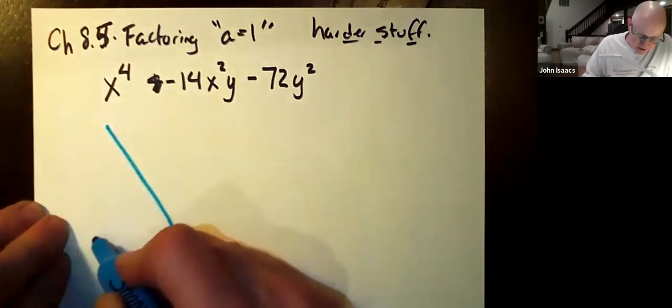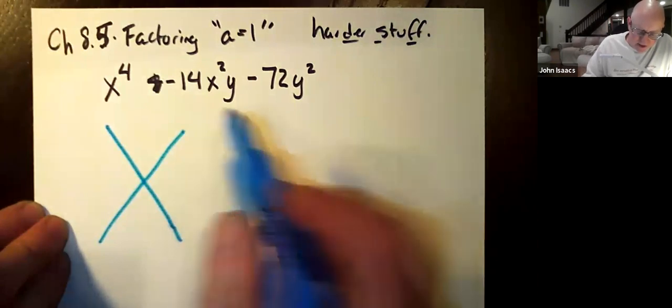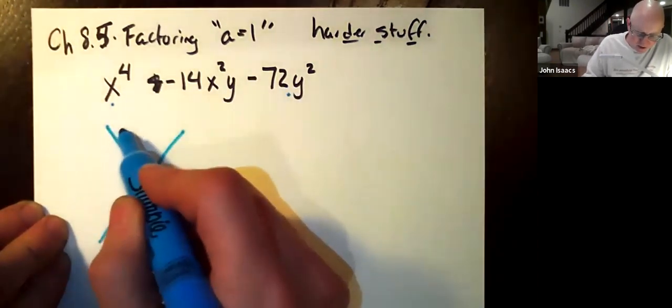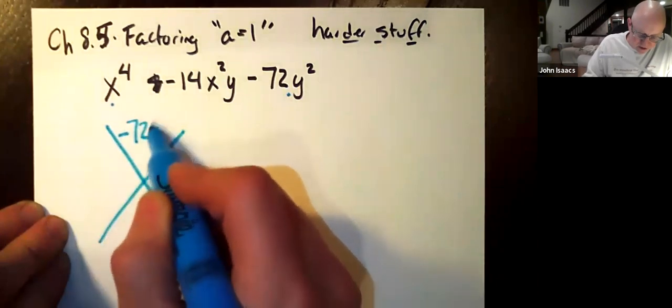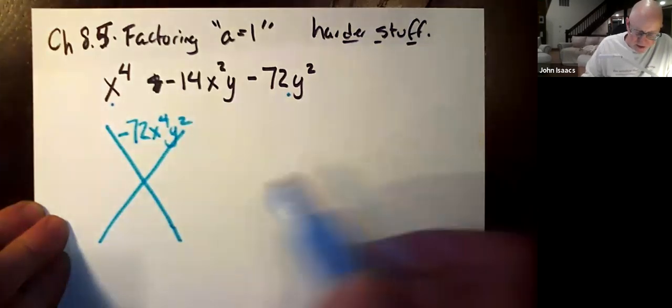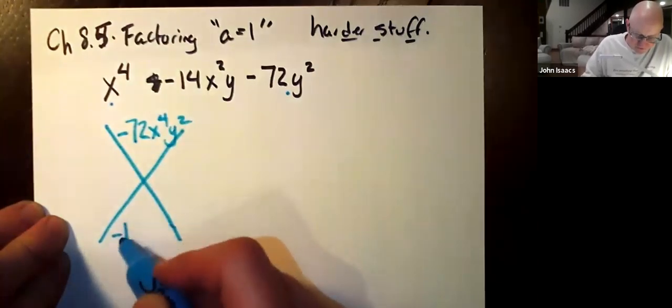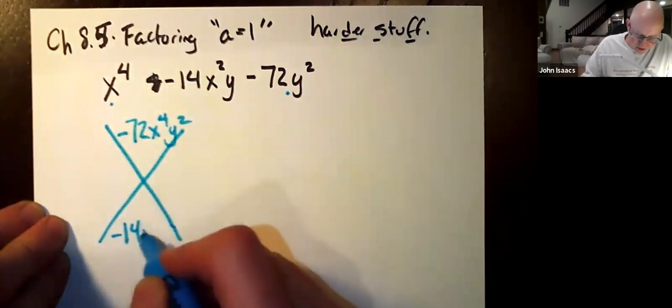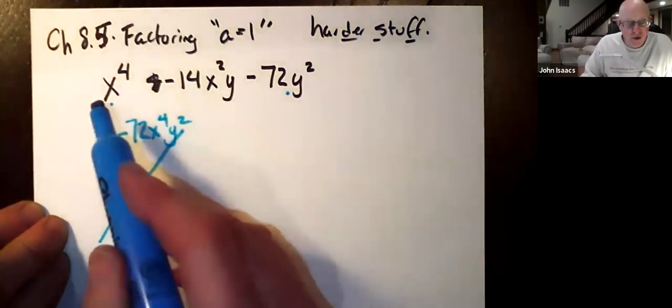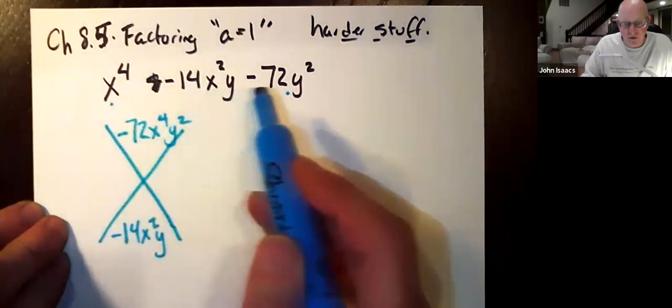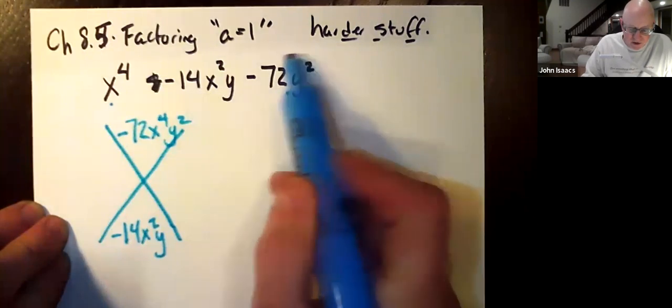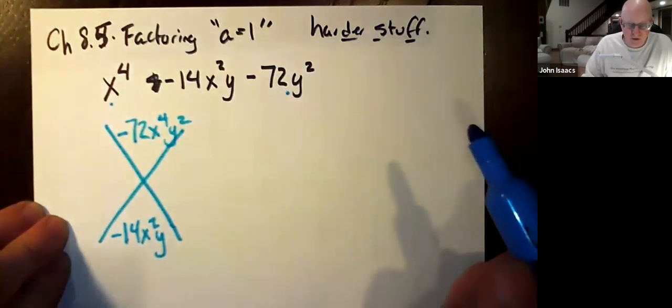So to start off with, let's make the diamond. So the diamond gets this term times this term in the top, negative 72, x to the fourth, y squared. In the bottom goes the middle term, negative 14, x squared, y. Now, I should emphasize, I checked for greatest common factors. This has x's in it and only x's in it. This term doesn't have any x's in it. There are no greatest common factors.